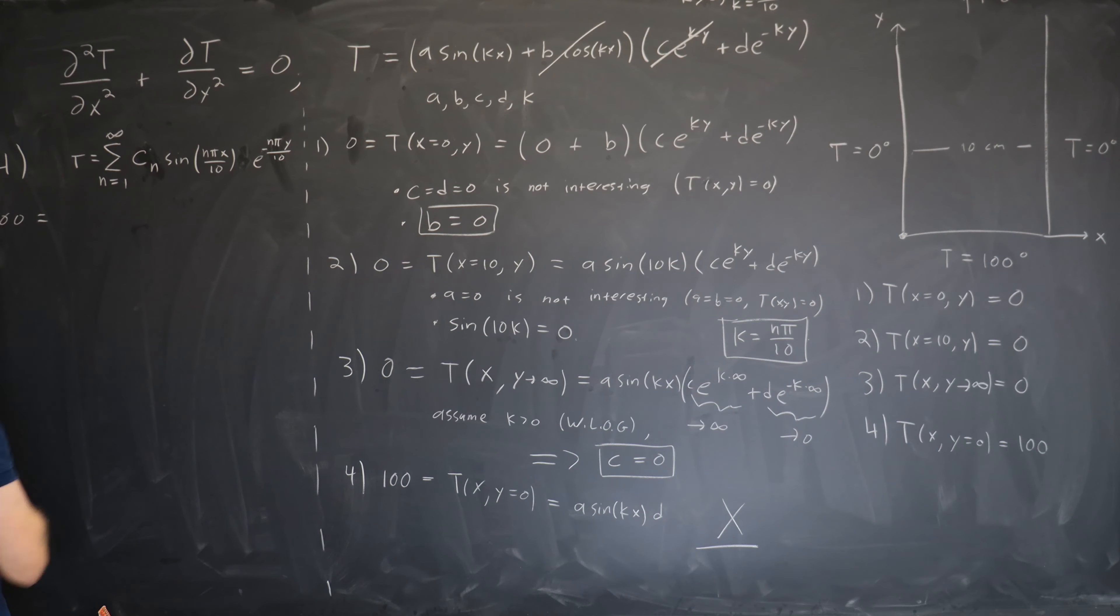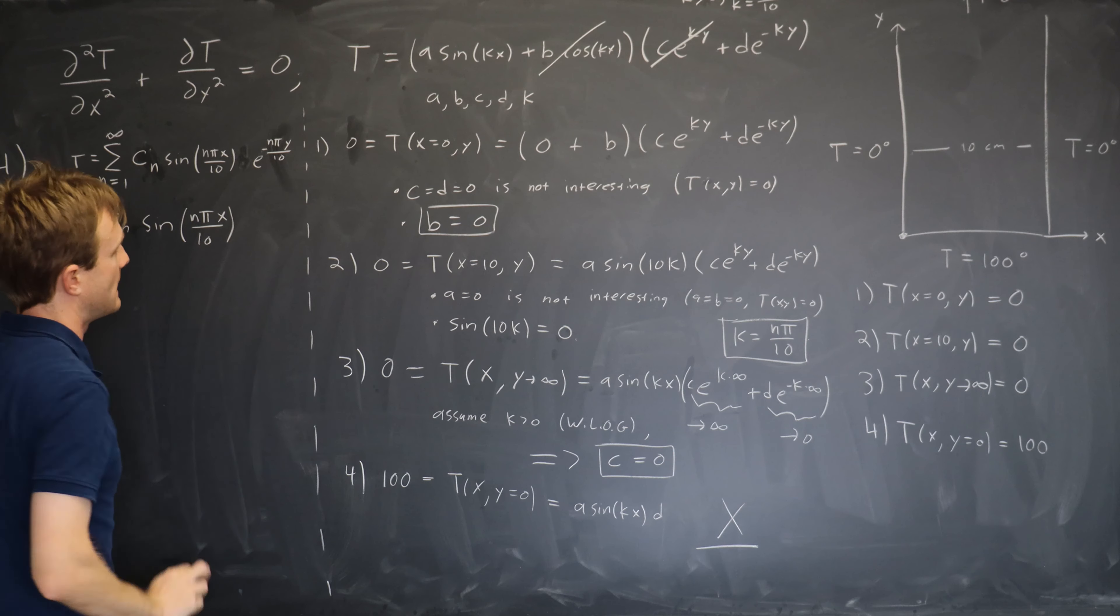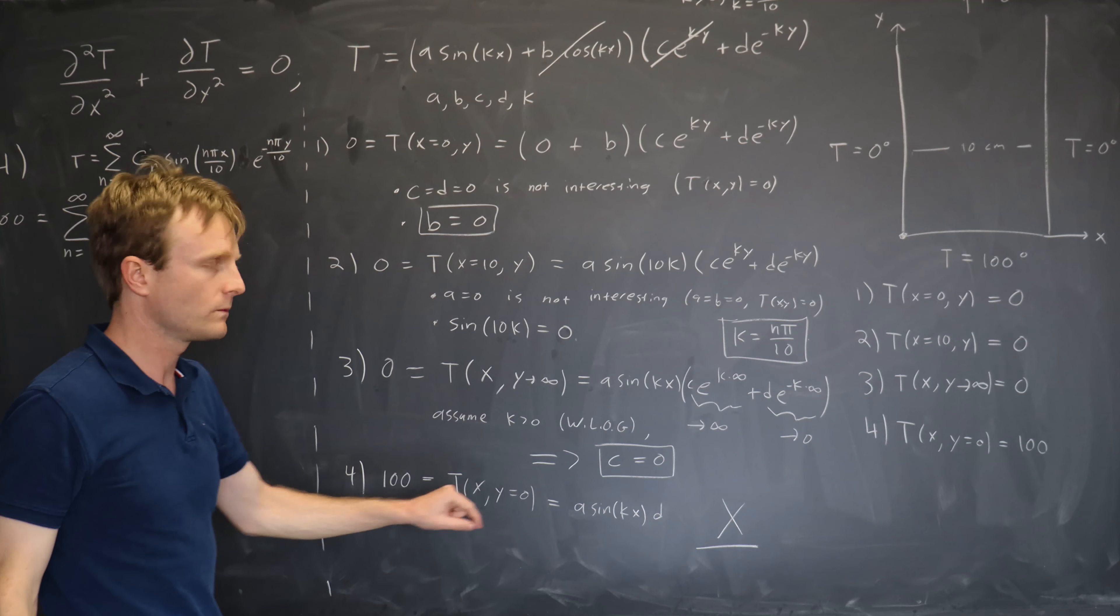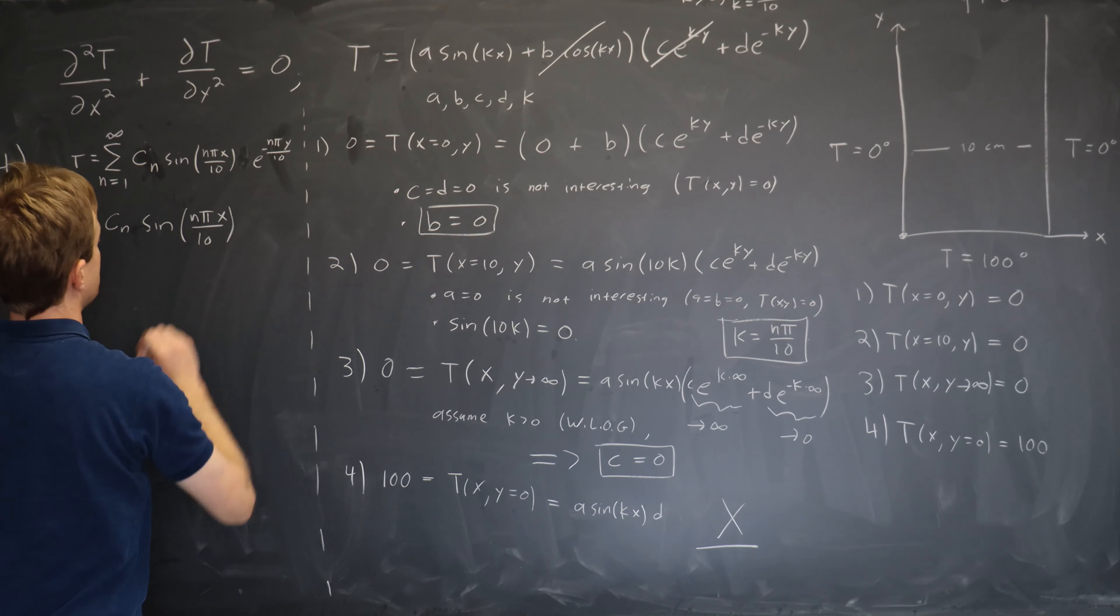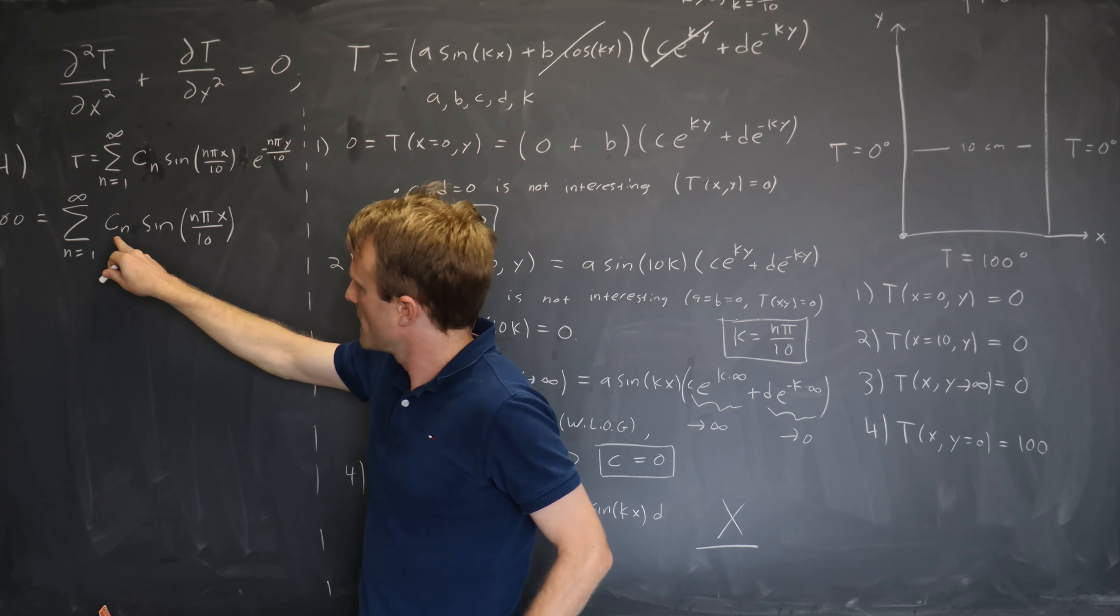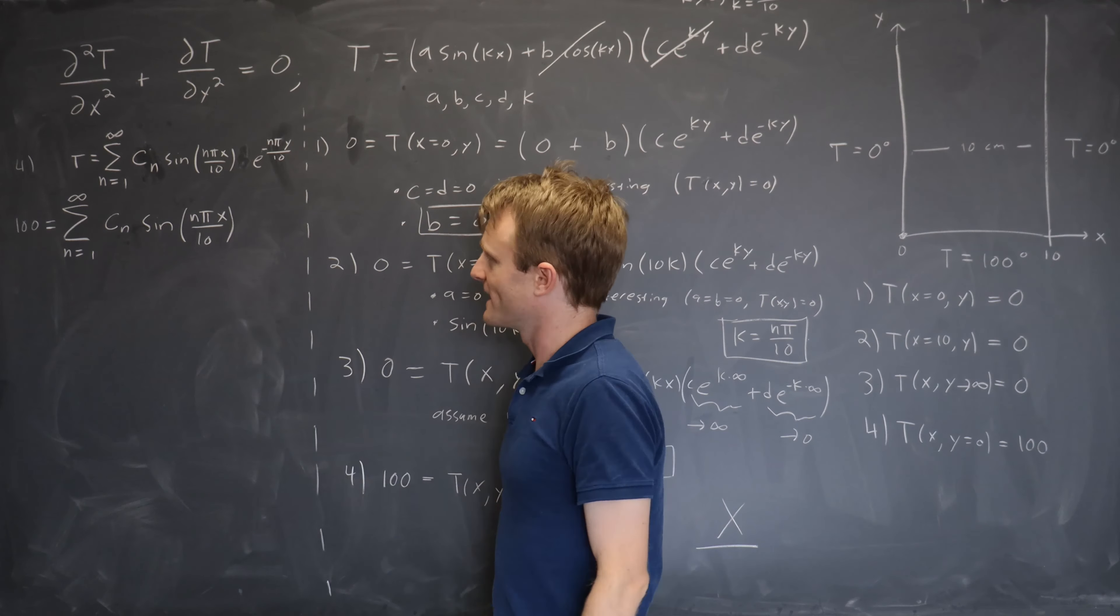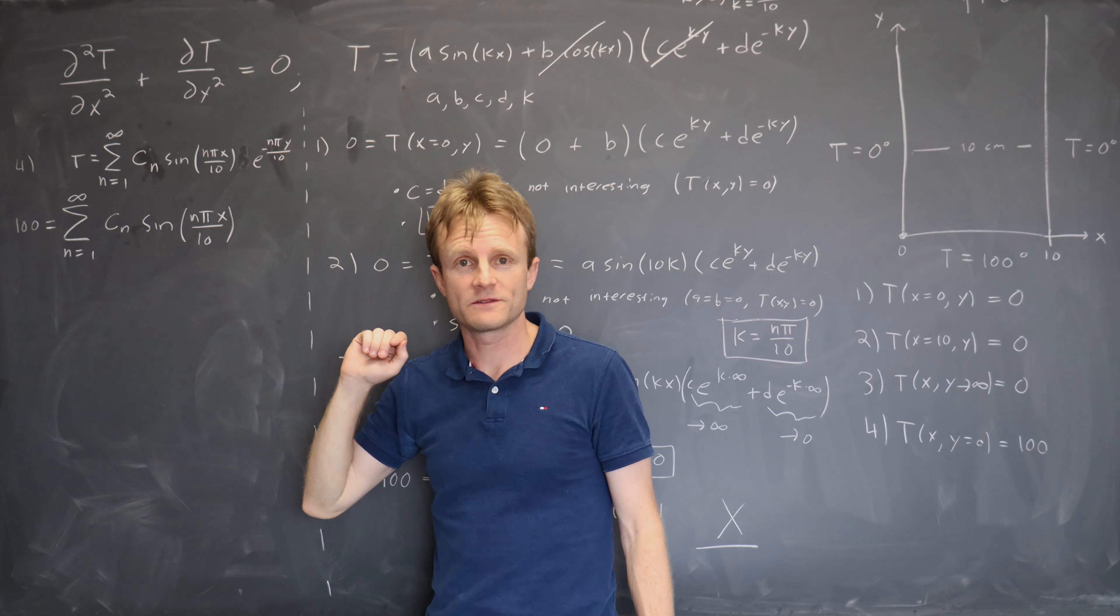So now let's see if we can satisfy condition 4. It says that 100 is equal to T of x and y equals 0. So that's the sum from n equals 1 to infinity of c_n sine(nπx/10), and then e^(-nπy/10). Well, we go to y equals 0 for condition 4, so that's just 1. So here's what we need to do. We need to find the numbers c_n such that this equation is true.